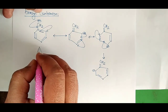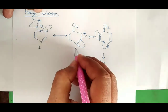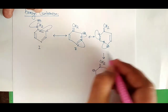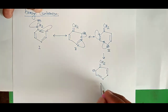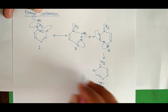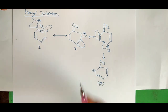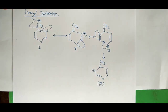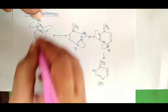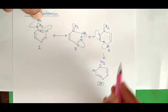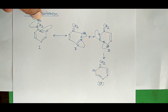If we count the resonating structures of the benzyl carbanion: this is the first resonating structure, this is the second, this is the third, and this is the fourth resonating structure. The negative charge has been delocalized onto different carbon atoms of the ring.